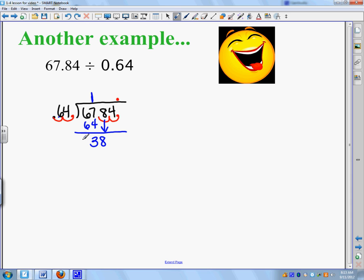Now, can 64 go into 38? No. So, now above this 8, in this empty spot, I'm going to put a 0, because it all has to line up. Now, I can bring down this number, and I can put 64 into 384.